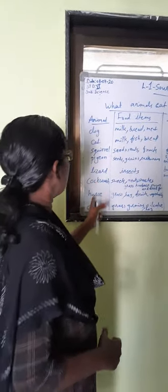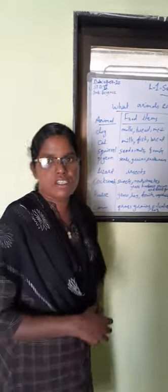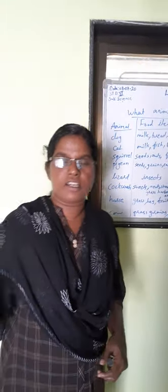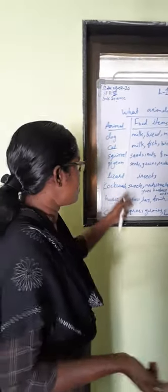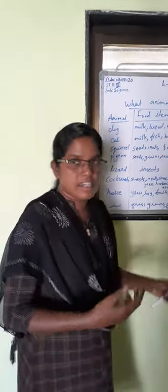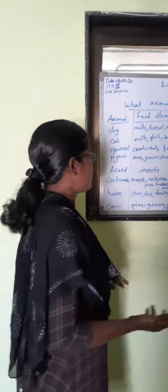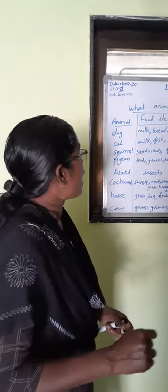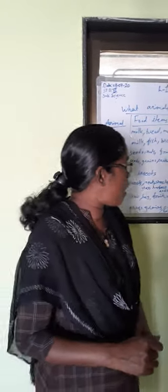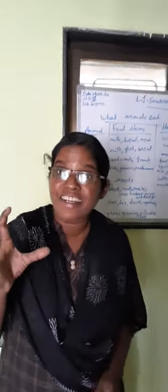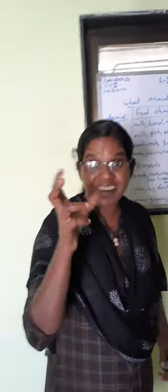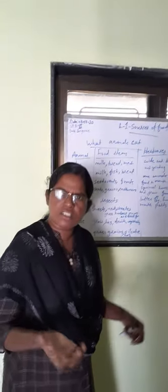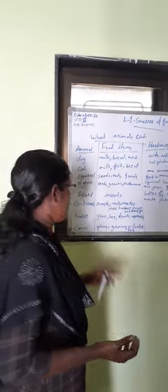Next one, horse. How many of you have a horse in your place? Horse eats grass — that is hay, dried grass. Horse also eats fruits and vegetables.